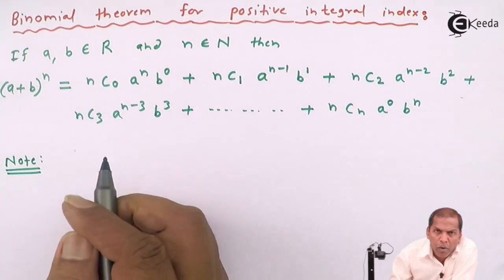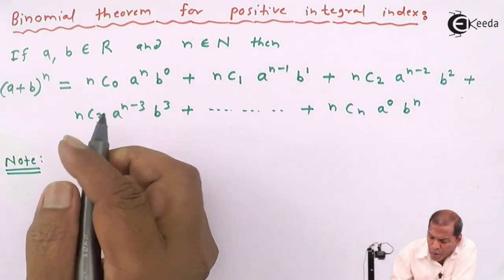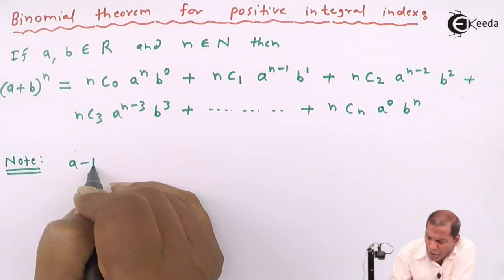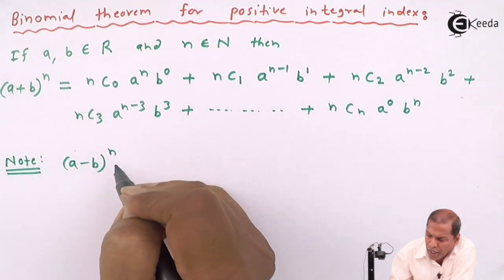Suppose while solving a problem somewhere we get (a-b)^n.